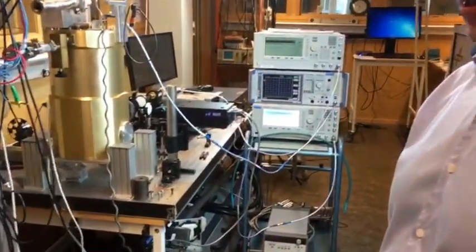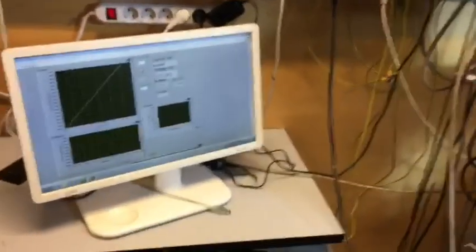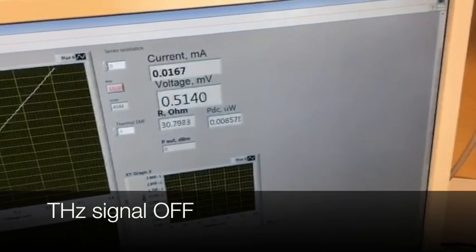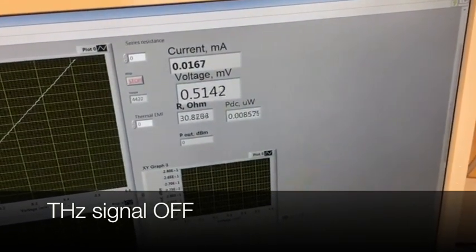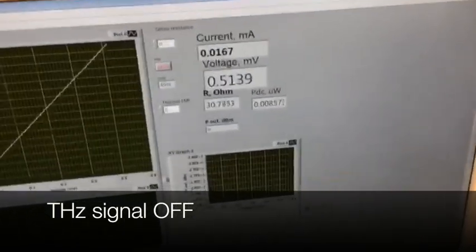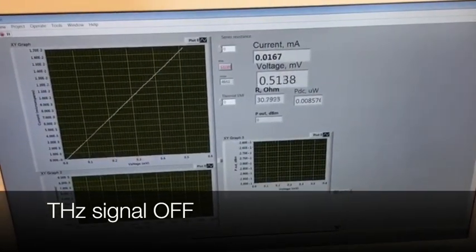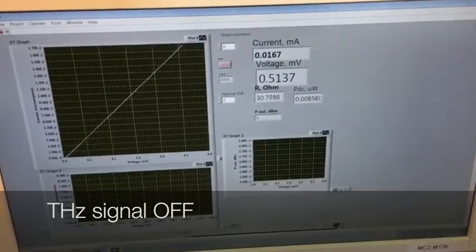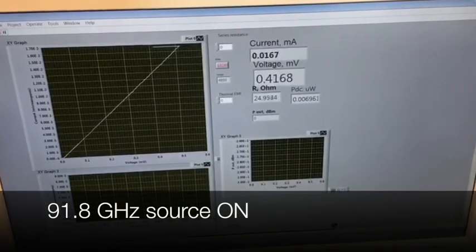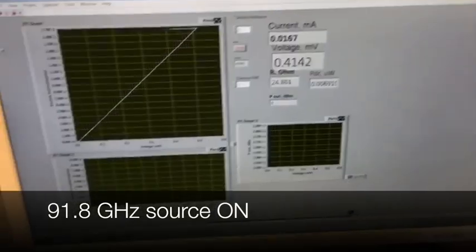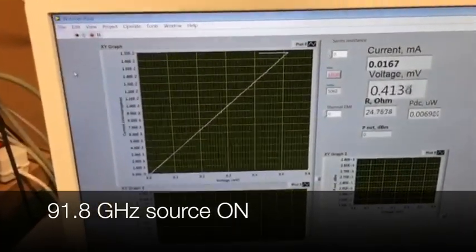Now we don't have any terahertz light applied to the device, although as soon as we switch it on you will immediately see the response on the voltage. So now we will apply a 91.8 GHz source—it's very powerful. You can see how the line went to the left.